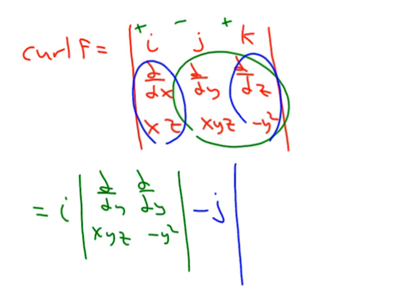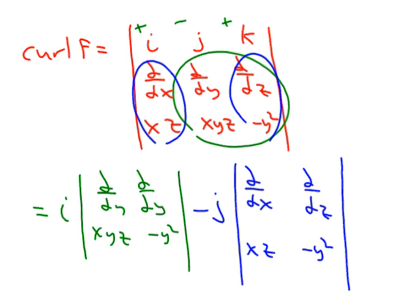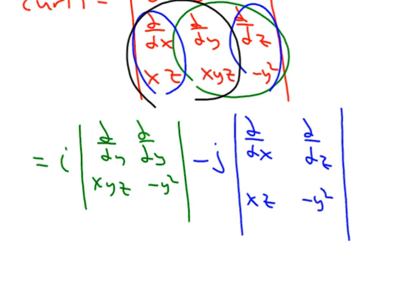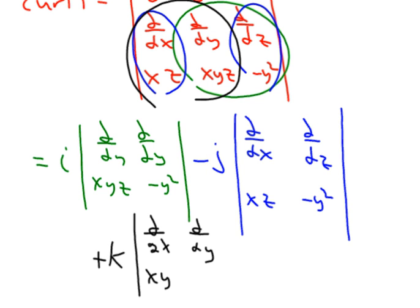The minor of j is going to be partial x, partial z in the first column and xz, negative y² in the second. And then lastly, plus k times its minor, which is partial x, partial y in the first column and xyz, xyz in the second — so partial x, partial y and then x, y, z.